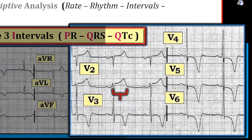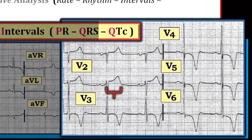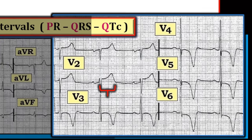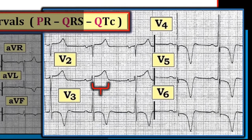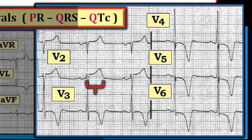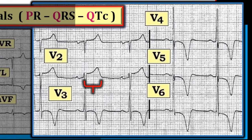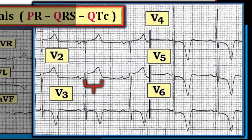Clinical concern from QT prolongation is usually minimal with values below 0.50 second. Since the computer is usually quite accurate for determining intervals, it's fine if you simply look on the computerized report for the QTc. Alternatively, the QTc is usually within the normal range if the QT that you measure is not more than half the R-to-R interval. The QT that we measure on this tracing is clearly not more than half the R-to-R interval.